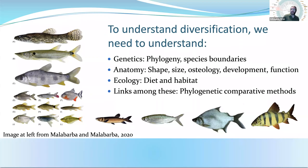In order to understand diversification, we absolutely need to understand genetics. In particular, we need to know about phylogeny and species boundaries. Population genetics and species-level genetics tell us what all the leaves on the tree of life are, and then the phylogeny tells us about how all those leaves fit together — what is the pattern of descent, and what are the evolutionary relationships among those species. All of that is very important for understanding diversification.